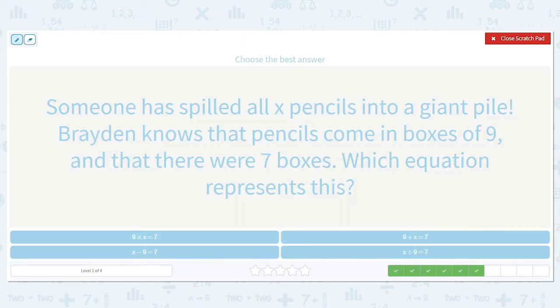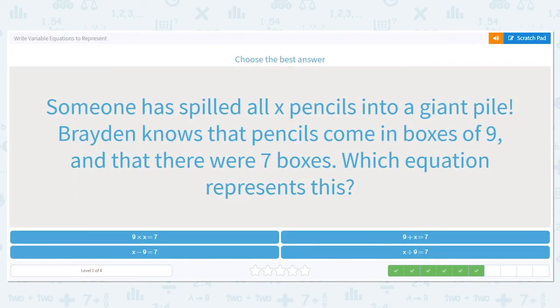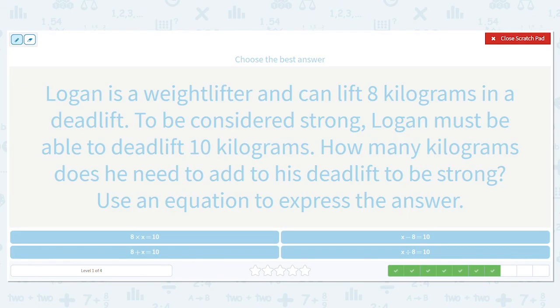Next one. Someone has spilled all x pencils into a giant pile. Brayden knows the pencils come in boxes of nine and there were seven boxes. Which equation represents this? Okay, so we have x amount of pencils and they come in boxes of nine, so we need to split them up because then there will be seven boxes. So we have a total of x pencils split into boxes where there's nine in each box, so there's seven boxes. So x divided by nine equals seven.